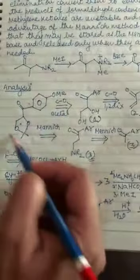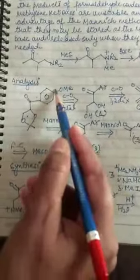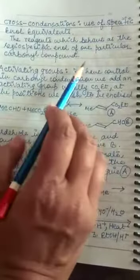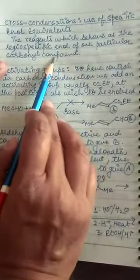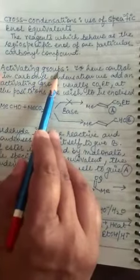Will be getting our target molecule. In this case this was the analysis. Now the another method for the cross condensation. Here we use the specific enol equivalents. Specific enol equivalents kya hote hain, that the enol of one particular carbonyl compound. This can be achieved by using the activating group.